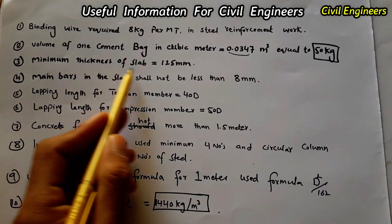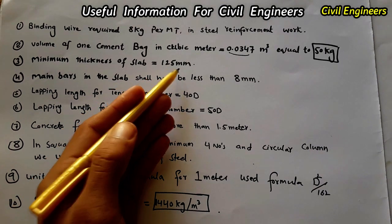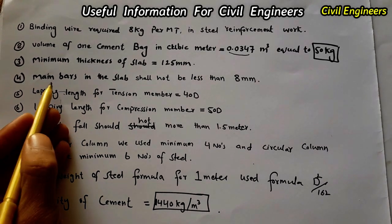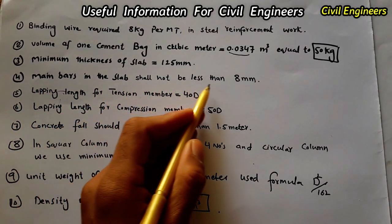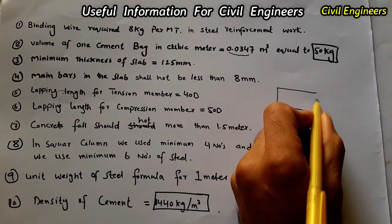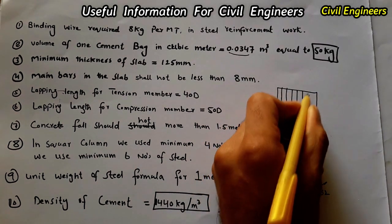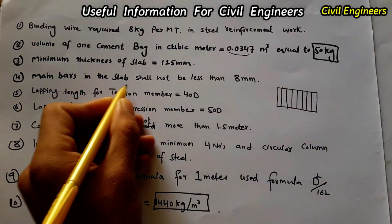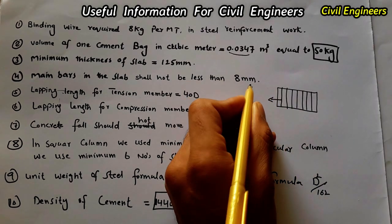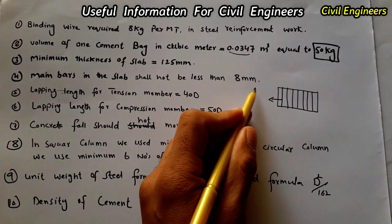The third point: the minimum thickness of the slab is 125 mm. Also, the main bars in the slab shall not be less than 8 mm diameter. The steel diameter should not be less than 8 mm for main bars in a slab. Note that distribution bars can be less than 8 mm.